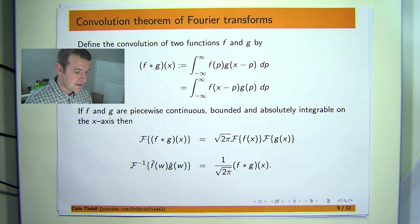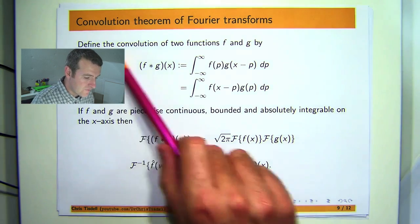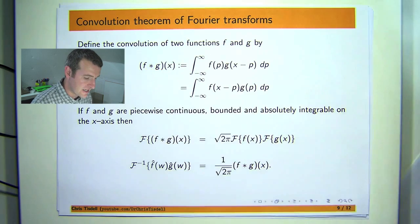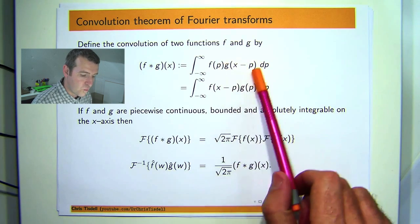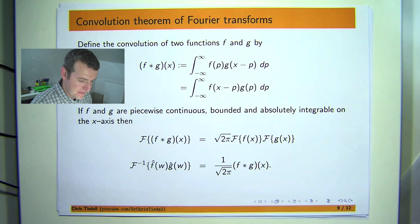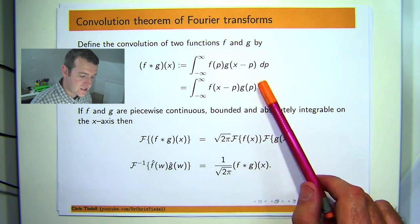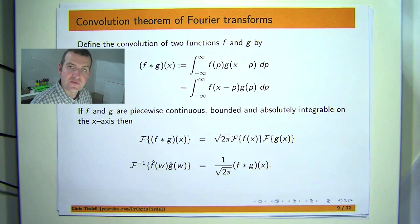So before we mention the theorem, what is a convolution? Well the convolution of two functions f and g denoted by this f star g is just basically one of the functions shifted either f or g then multiplied by the other function and then integrated over the whole real line.